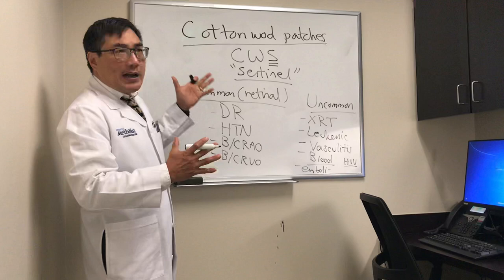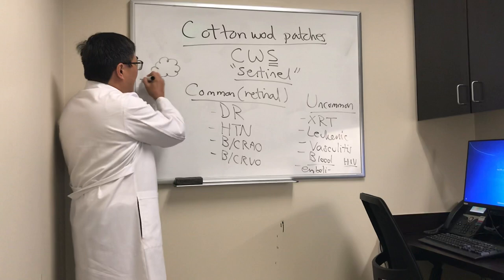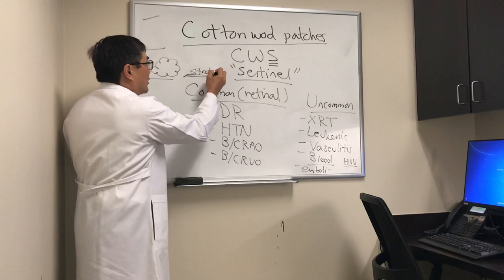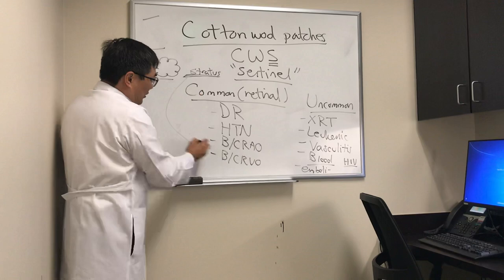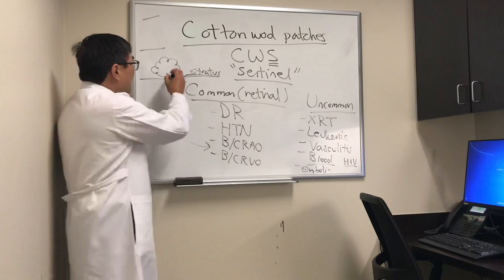Looking at cotton wool patches is kind of like looking at clouds — they're fluffy and white. At the lowest levels, clouds are horizontal like stratum, so these are stratus clouds, which are stratified and horizontal. That corresponds to the types of cotton wool patches we see in arterial and vein occlusions, where the cotton wool patches line up along the artery or the vein.